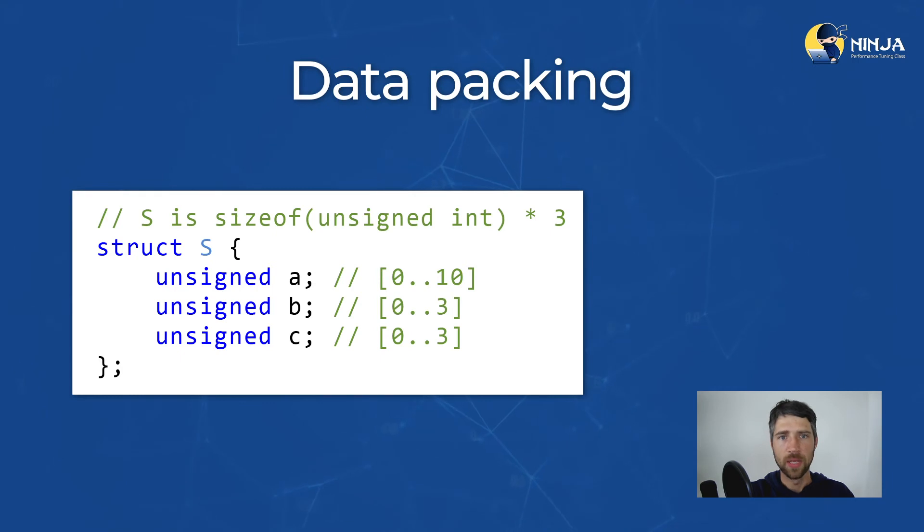For example, we know that element A has possible values from 0 to 10, while B and C take values from 0 to 3. So A actually doesn't need all 4 bytes of storage; it only needs 4 bits.